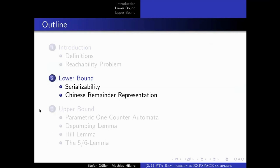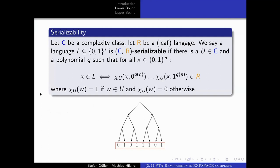For the lower bound, there are two complexity notions I want to introduce: serializability and Chinese remainder representation. I want to convey to you the idea behind serializability.